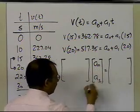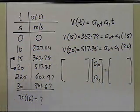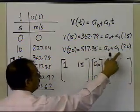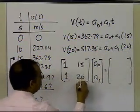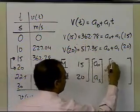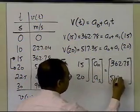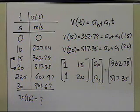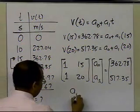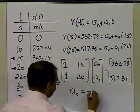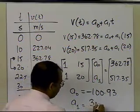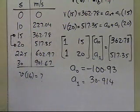The unknowns a0 and a1 go in the solution vector. The coefficients of a0 are 1 and 1; the coefficients of a1 are 15 and 20. The right-hand side values are 362.78 and 517.35. I suggest using Gaussian elimination. Once you solve those two equations, a0 turns out to be −100.93 and a1 turns out to be 30.914.